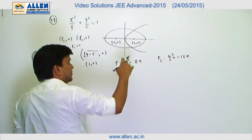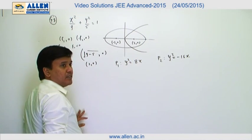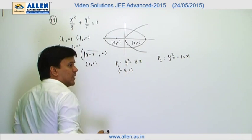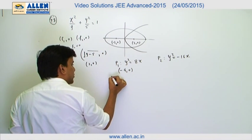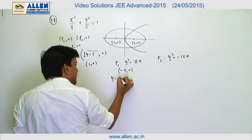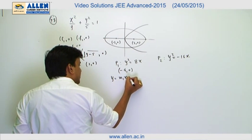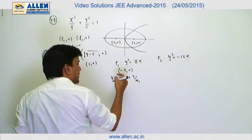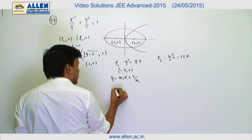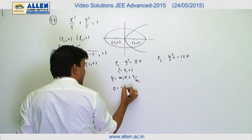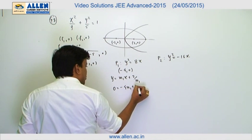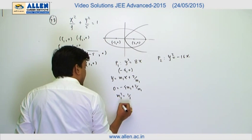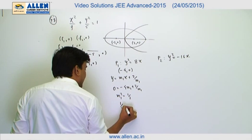The tangent to parabola P1 passes through (-4, 0). Let the slope of that tangent be m1. The equation of the tangent is y = m1·x + a/m1, where a = 2, giving y = m1·x + 2/m1. Since this passes through (-4, 0): 0 = -4m1 + 2/m1, so m1² = 1/2, which implies 1/m1² = 2.